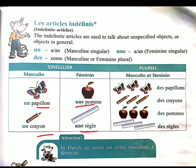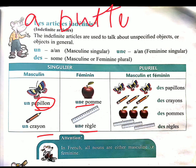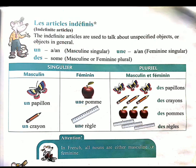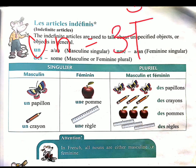For example, papillon means butterfly. It does not end with 'e,' so it is masculine. If I want to say 'a butterfly' in French, I say un papillon. I am writing the Hindi pronunciation here: un is pronounced as 'un.'